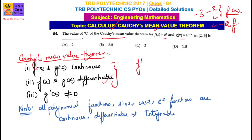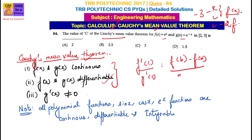The formula for Cauchy's Mean Value Theorem is: f dash of c divided by g dash of c is equal to f of b minus f of a, divided by g of b minus g of a.